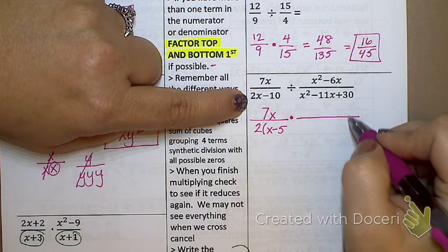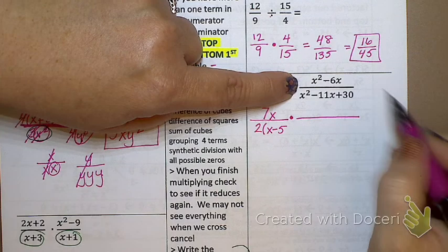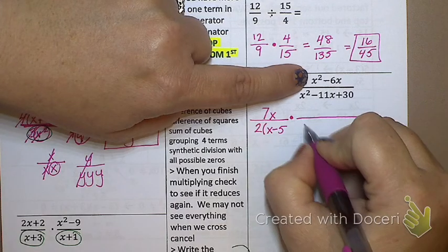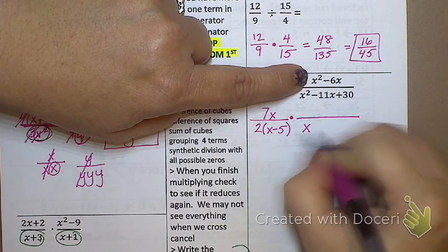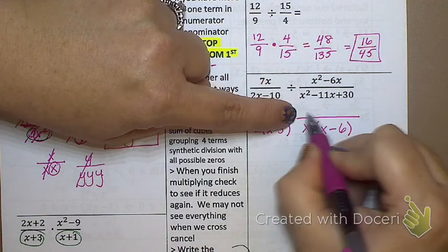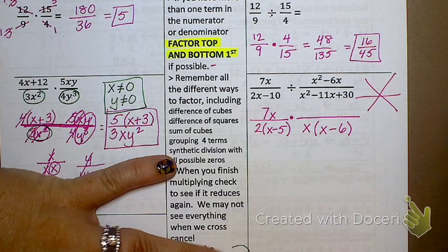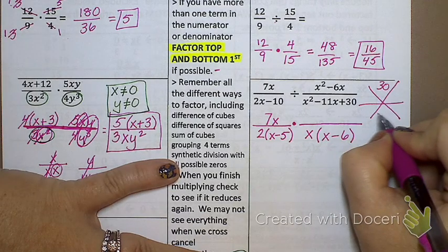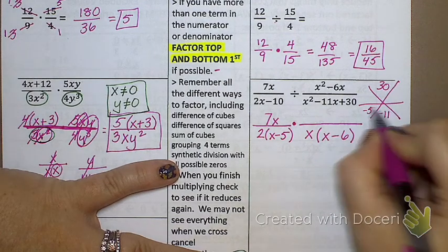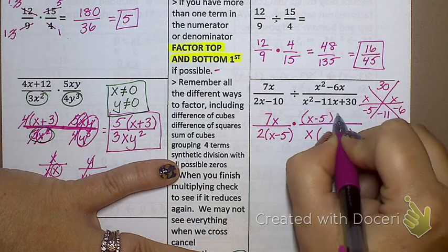Now I get to my other one. So when I factor x squared minus 6x, where's the answer going to go? On the bottom over here. So how does this factor? I can take out an x and I'm left with what? x minus 6. This guy, when I factor it, is going to go on the top. How do I factor that? Snowflake. 30, negative 11. What have we got? Negative 5 and negative 6. So I have x minus 5 and x minus 6.